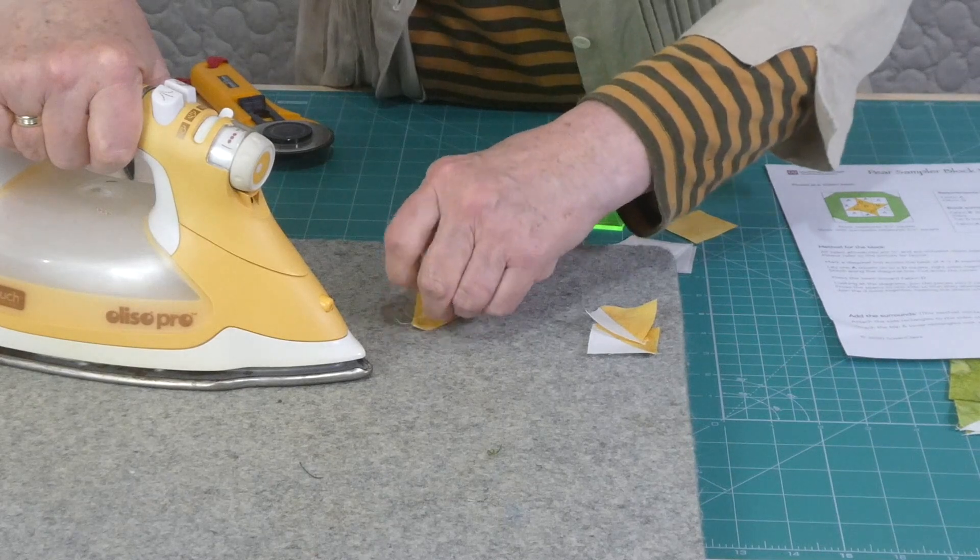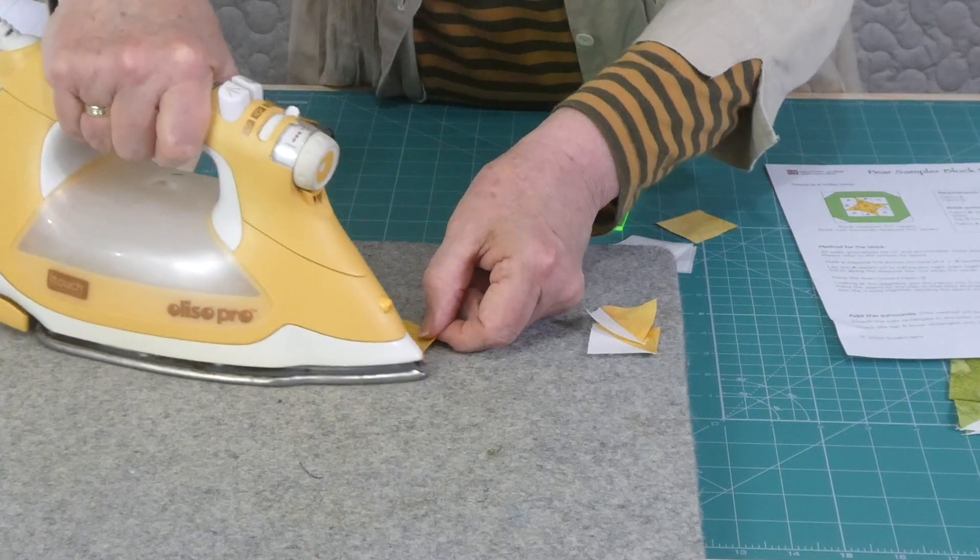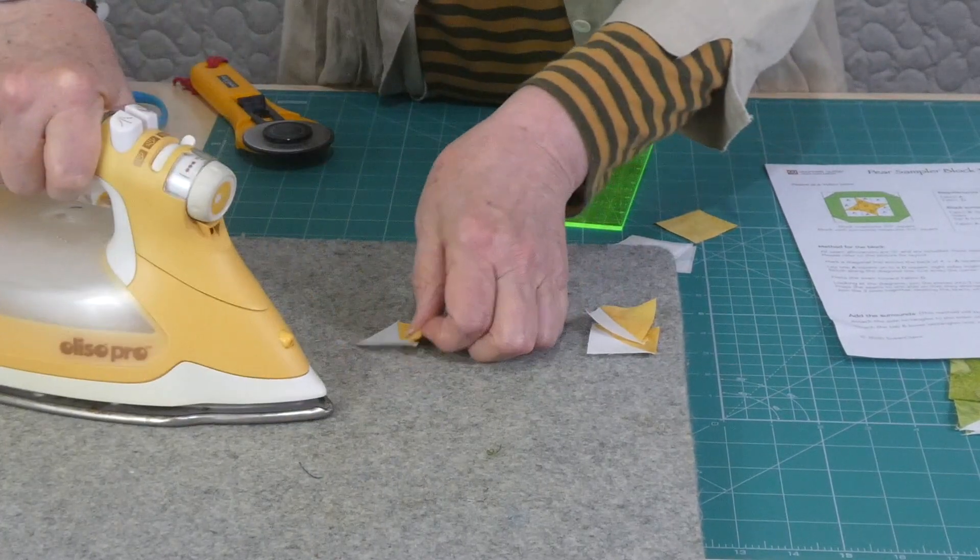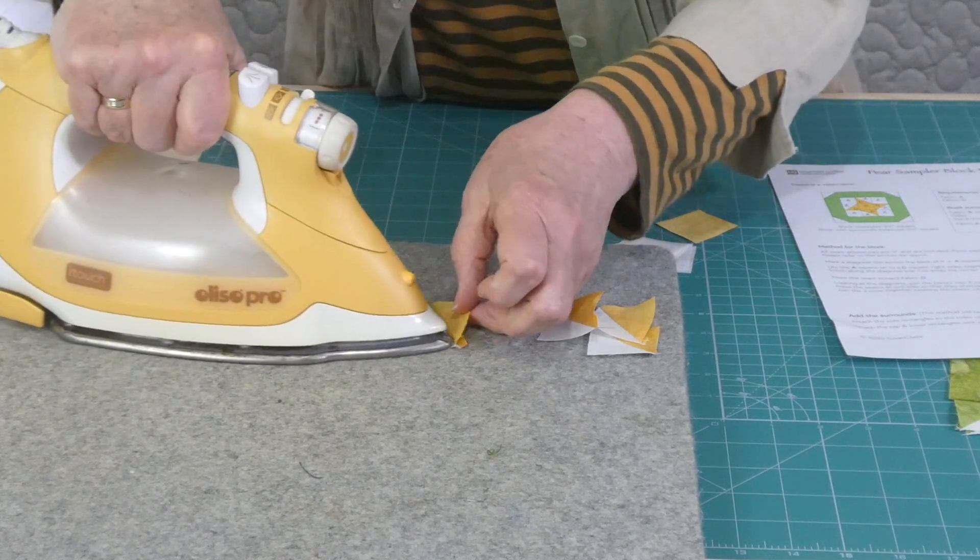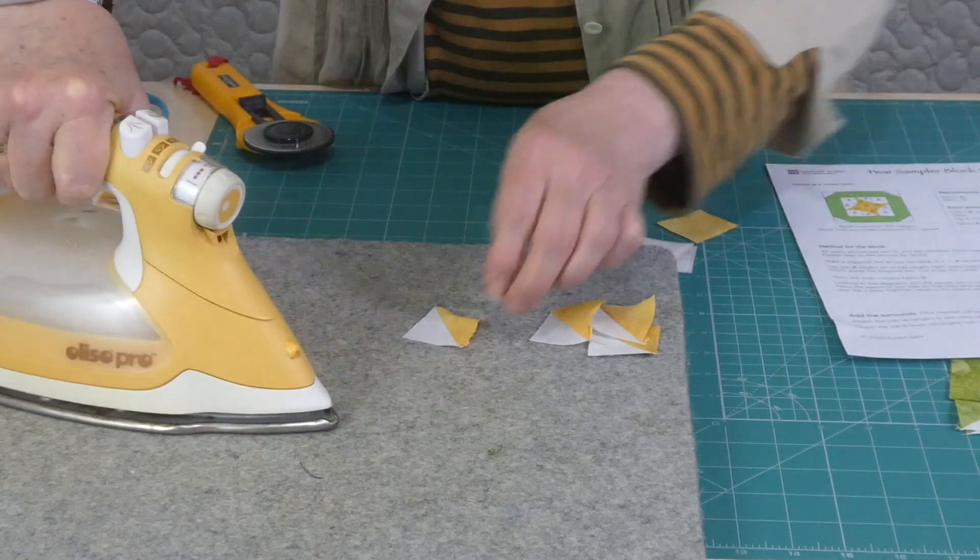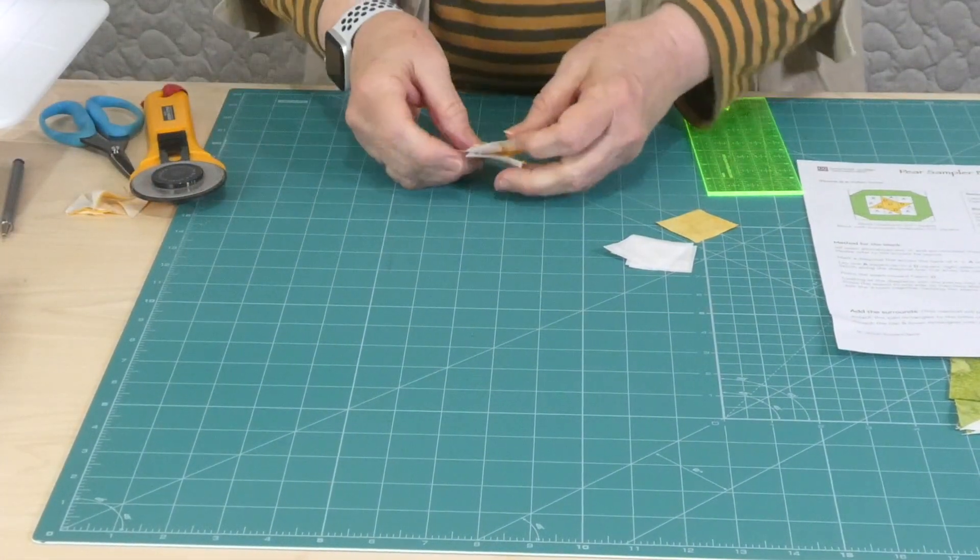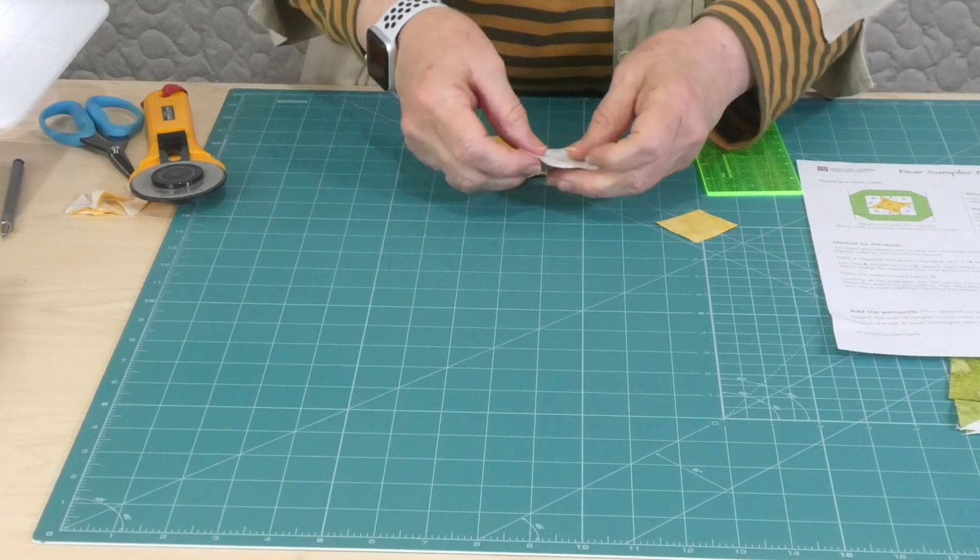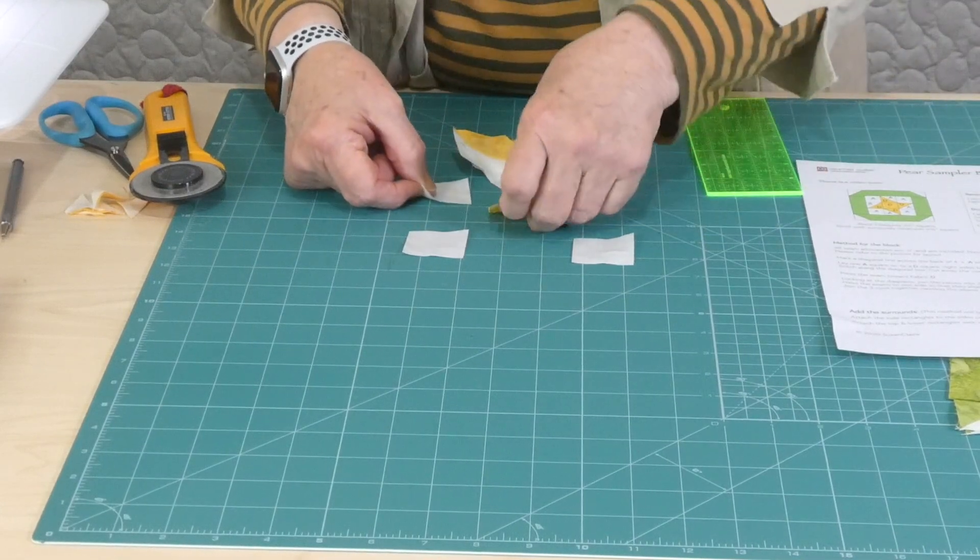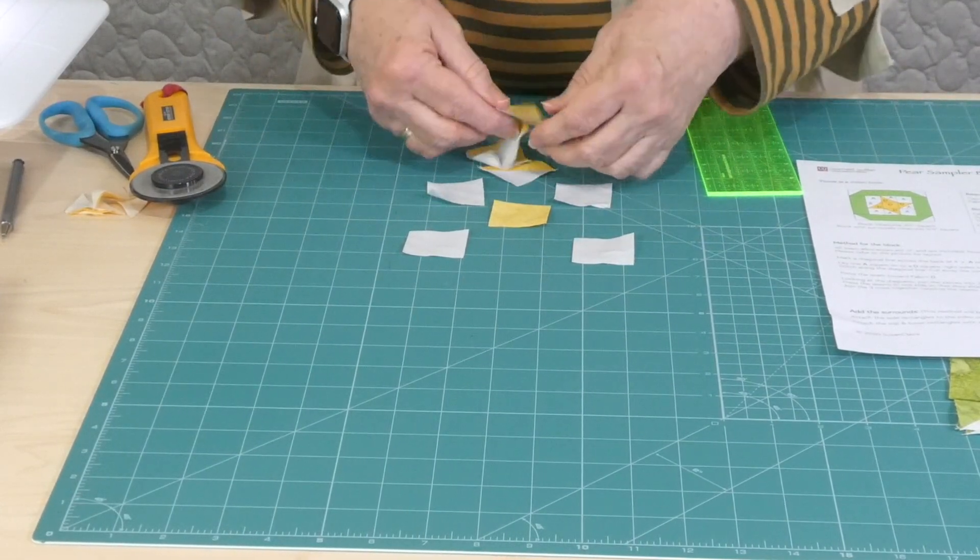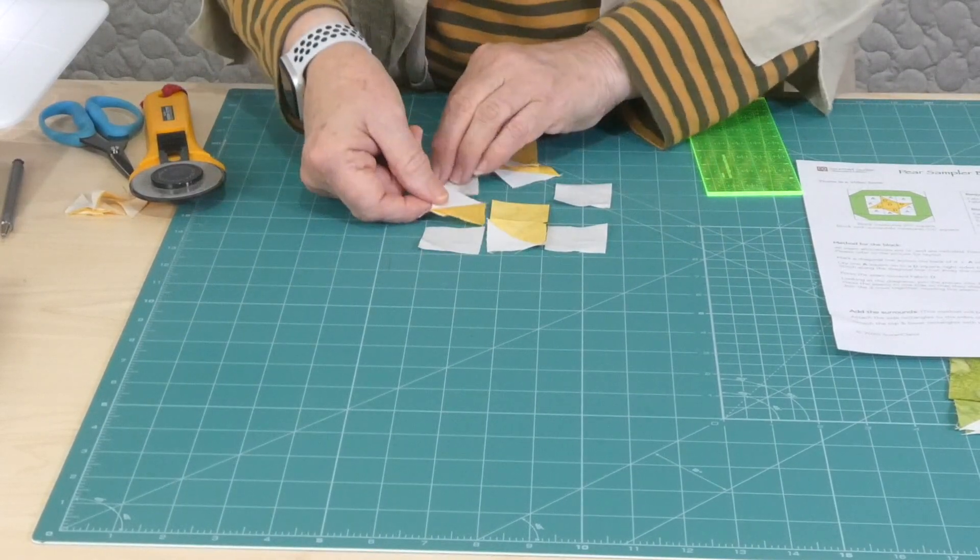Then we can lay out. It ends up being a little nine patch that because of the triangles we get this little star appearing, which is really nice. So I find it's easier if I lay the block out before I start sewing so that I get it right. So we've got the yellow in the middle and then we've got these triangles that are basically rotating around.